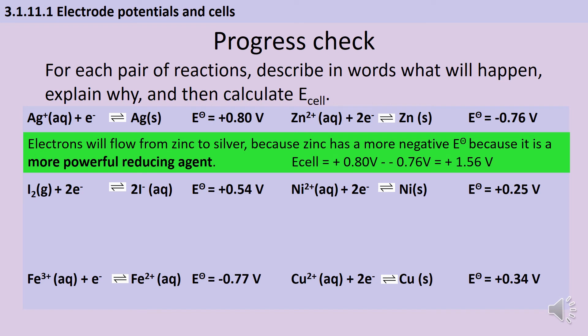Here's another chance to pause the video and make sure you've understood this. For each example you're going to describe in words what will happen, explain why, and then calculate the potential difference for that whole cell. In the first example, the silver half cell has a positive standard potential and the zinc half cell has a negative standard potential, so silver is more positive and electrons flow from zinc to silver — because zinc has a more negative standard potential, making it a more powerful reducing agent. The EMF for that cell is +0.156 volts. Remember it's really important that you write the positive sign.